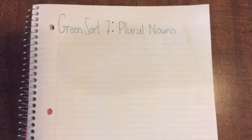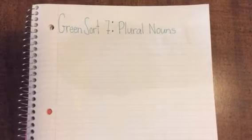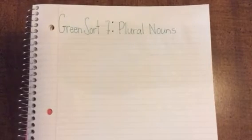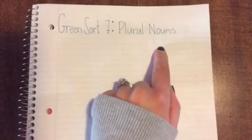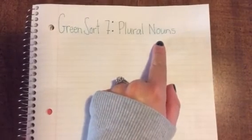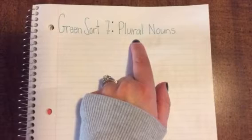Hello third graders and welcome to the word study video for the green sort number seven. For this sort we are going to be taking a look at plural nouns. Just a reminder, nouns are people, places, things, or ideas. And to make it plural means more than one.